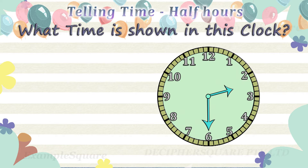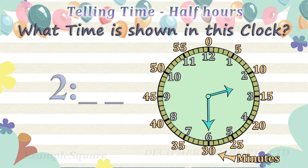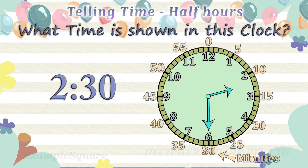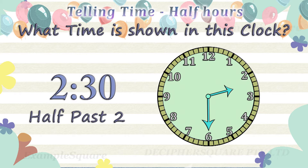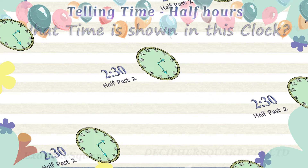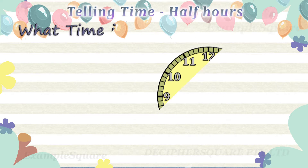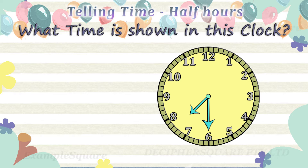What time is shown in this clock? The short hand, that is the hour hand, is pointing in between two and three, so the time is two hours and some minutes. The long hand, that is the minute hand, is pointing at six — the minute hand is referring to thirty minutes. Thirty minutes is equal to half an hour. The time shown here is half past two, or two thirty.